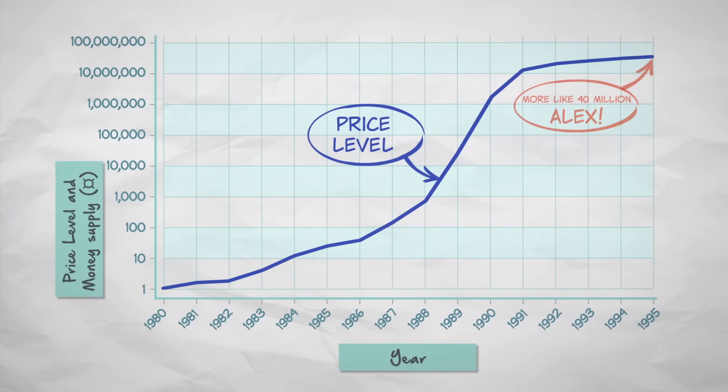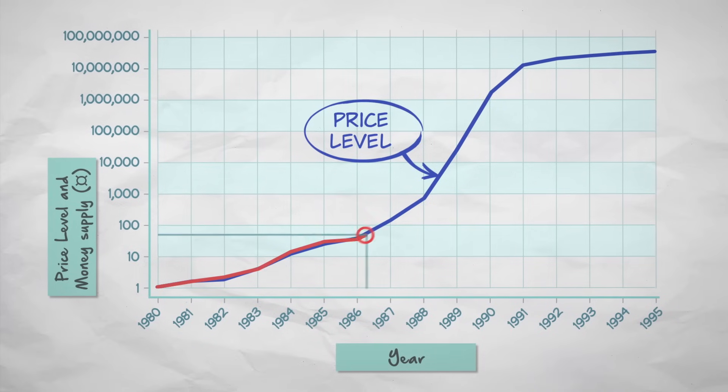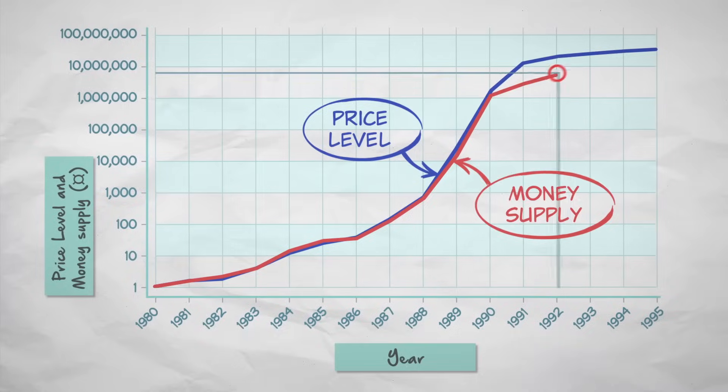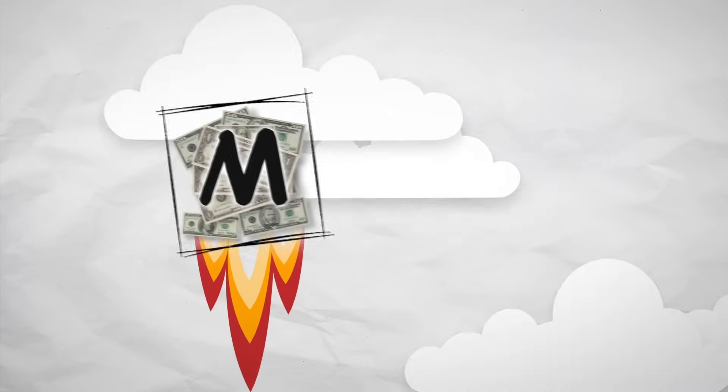Now, what caused this massive increase in prices? Well, just as the quantity theory would predict, we also see at this time a massive increase in the money supply. M skyrocketed and so did P.